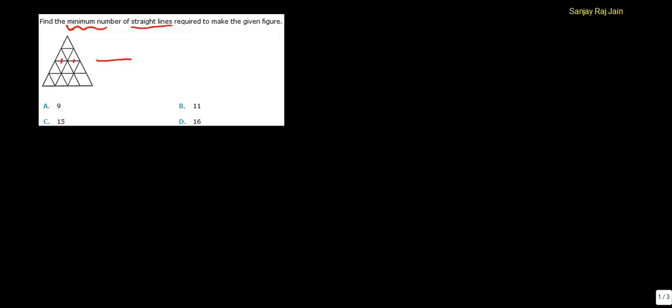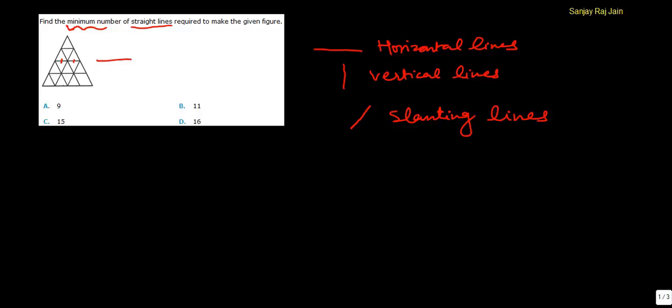We need to follow some basic steps here. There can be three types of lines broadly: horizontal lines, vertical lines, and slanting lines. Slanting lines will vary from question to question - these may be like this or these may be like this.